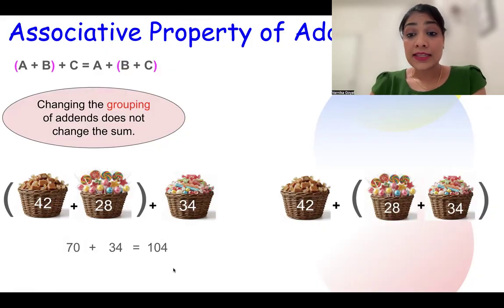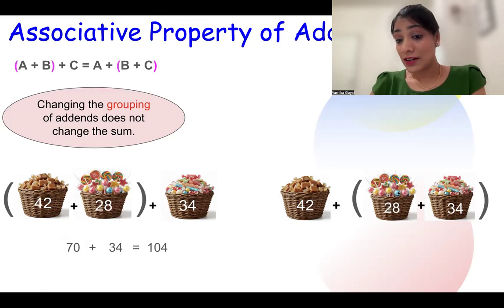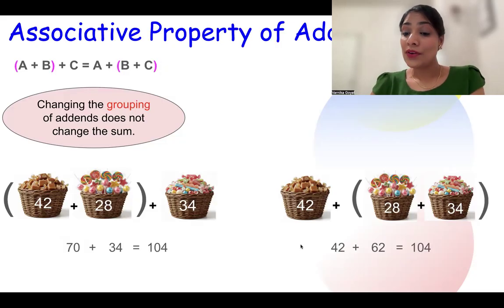Now let's do another way. Let's make a group of 28 and 34. So we add 28 lollipops with 34 candies. The total is 62. Now we add the total number of toffees to it. The sum is 104. So you see the sum is the same. So changing the grouping of our addends did not change our sum.